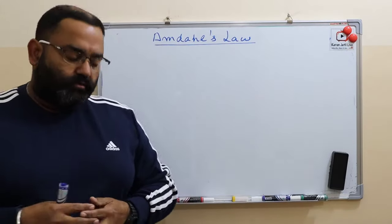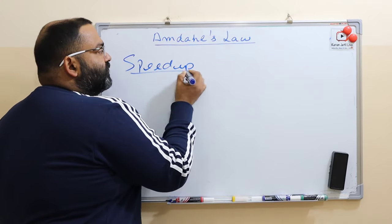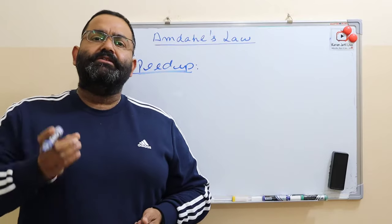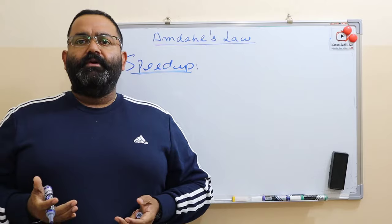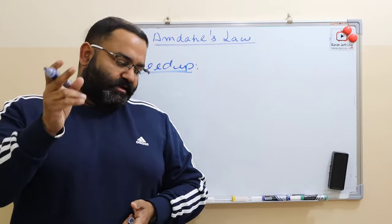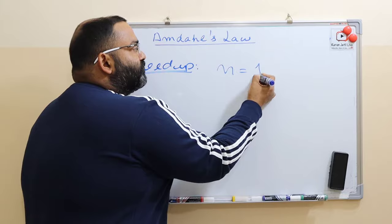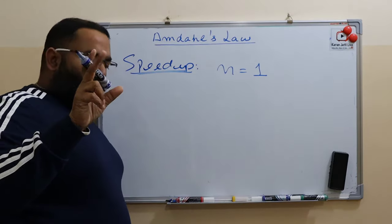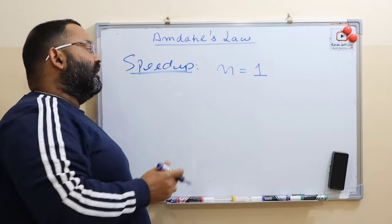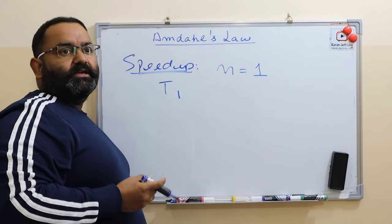Before we start with Amdahl's law, let's discuss something called speed up. What is speed up? If a single processor finishes one program in one unit of time, how much time will multiple processors require to finish that same task? For example, if we have one processor — let the number of processors be denoted by N — for one processor the time is T1.